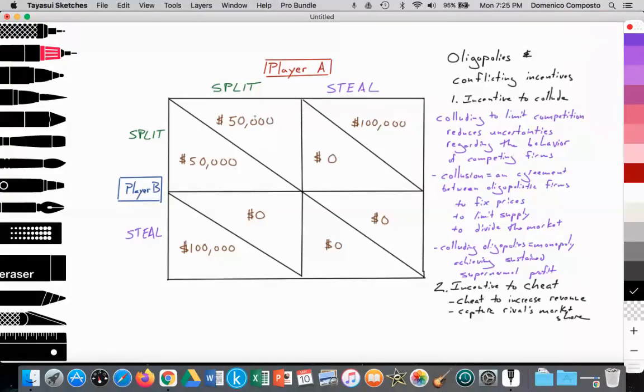Now, the thing is, they don't know what the decision of the other player will be. They will have a moment to collude, to speak to each other, to convince each other to perhaps split. And then they're going to make an independent decision, a secret decision, which they will reveal at the same time.